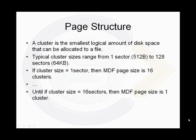In a file system, a cluster is the smallest logical amount of disk space that can be allocated to contain a file. Typical cluster sizes range from one sector to 128 sectors. So if the cluster size is one sector, then the MDF page size is 16 clusters. And so on until if the cluster size is 16 sectors, then the MDF page will occupy a single cluster.